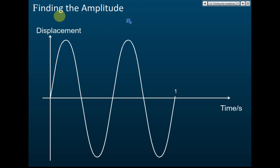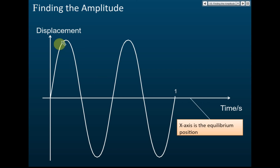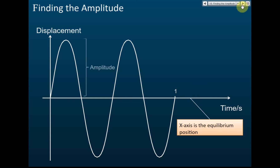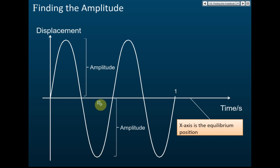Now, finding amplitude from the displacement-time graph. The x-axis is the equilibrium position, because the x-axis is the center of the oscillating system. Amplitude is the maximum displacement from the equilibrium position. So the maximum point on the graph represents the amplitude. You can also use the minimum point — the maximum displacement from the equilibrium position in either direction is the amplitude.